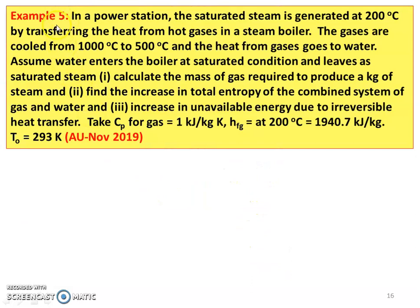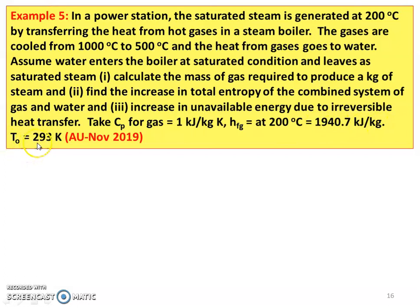Next, example number 5. In a power station, saturated steam is generated at 200 degree Celsius by transferring heat from hot gases in a steam boiler. The gases are cooled from 1000 degree Celsius to 500 degree Celsius, and the heat from the gases goes to the water to convert it into steam. Assume water enters the boiler at saturated condition and leaves as saturated steam. Calculate the mass of gas required to produce 1 kg of steam, the increase in total entropy of the combined system, and the increase in unavailable energy due to irreversible heat transfer. CP for the gas equal to 1 kJ per kg kelvin. HFG at 200 degree Celsius, latent heat from the table, is 1040.7 kJ per kg. Surrounding temperature TO equal to 293 kelvin.